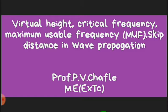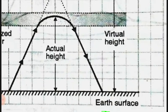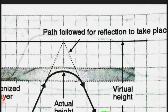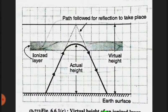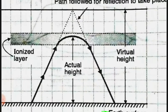The first topic is virtual height. This is the diagram of virtual height, in which we see the ionized layer, the virtual height, and the actual height. This is the earth surface. This is the path followed for the reflection to take place. The incident wave returns back to the earth due to reflection.